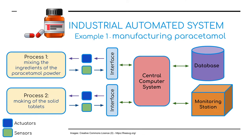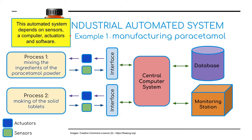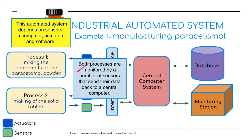We're going to look at some real-world applications, the first being the manufacturing of painkillers — paracetamol. We've got two processes going on. Process one is the mixing of the ingredients of the paracetamol powder that goes into the tablets. Process two is the making of the solid tablets. The automated system depends on sensors, a computer, actuators, and software. Both processes are monitored by sensors that send their data back to the central computer system.